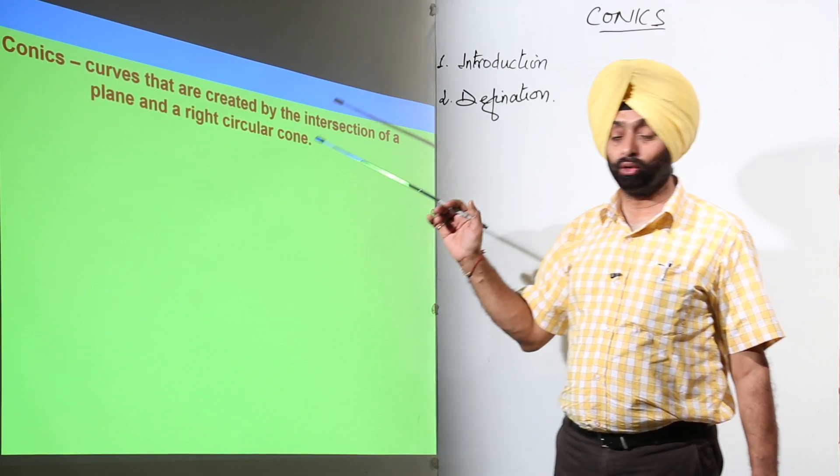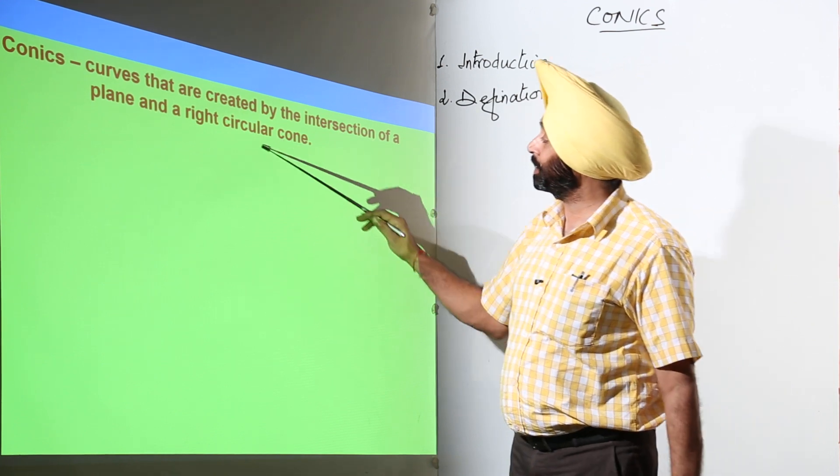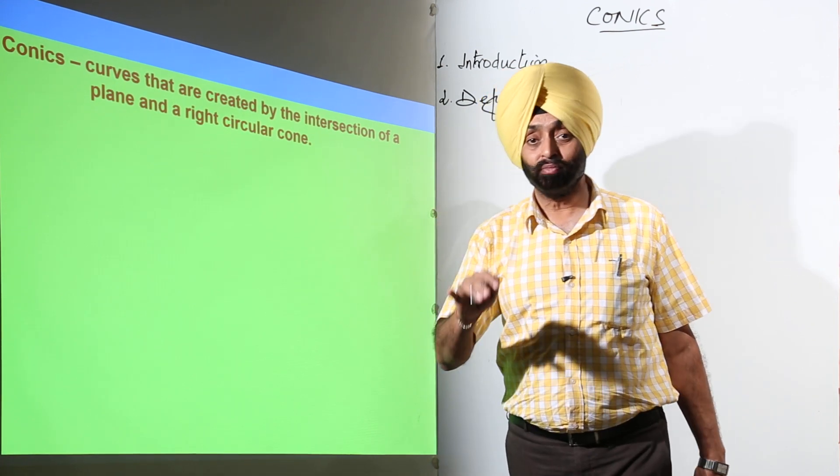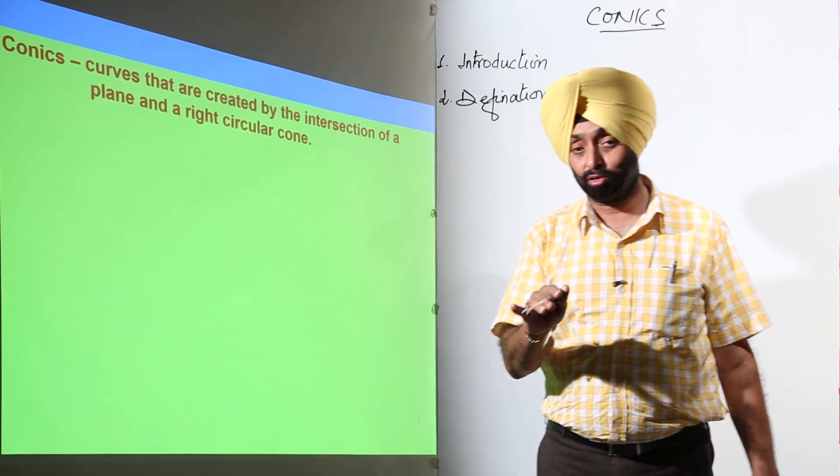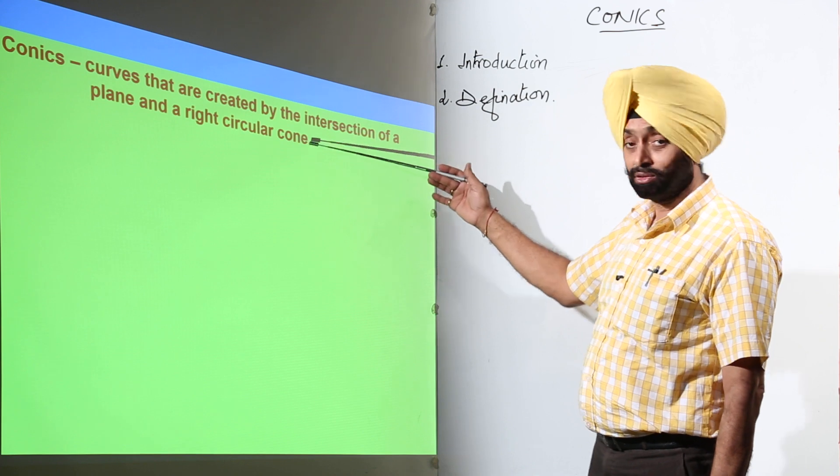For the definition part, conics are curves that are created by the intersection of a plane and a right circular cone. What I told you? Intersection of a plane with a double-napped right circular cone. That was the correct definition, accurate definition. This is also perfect.